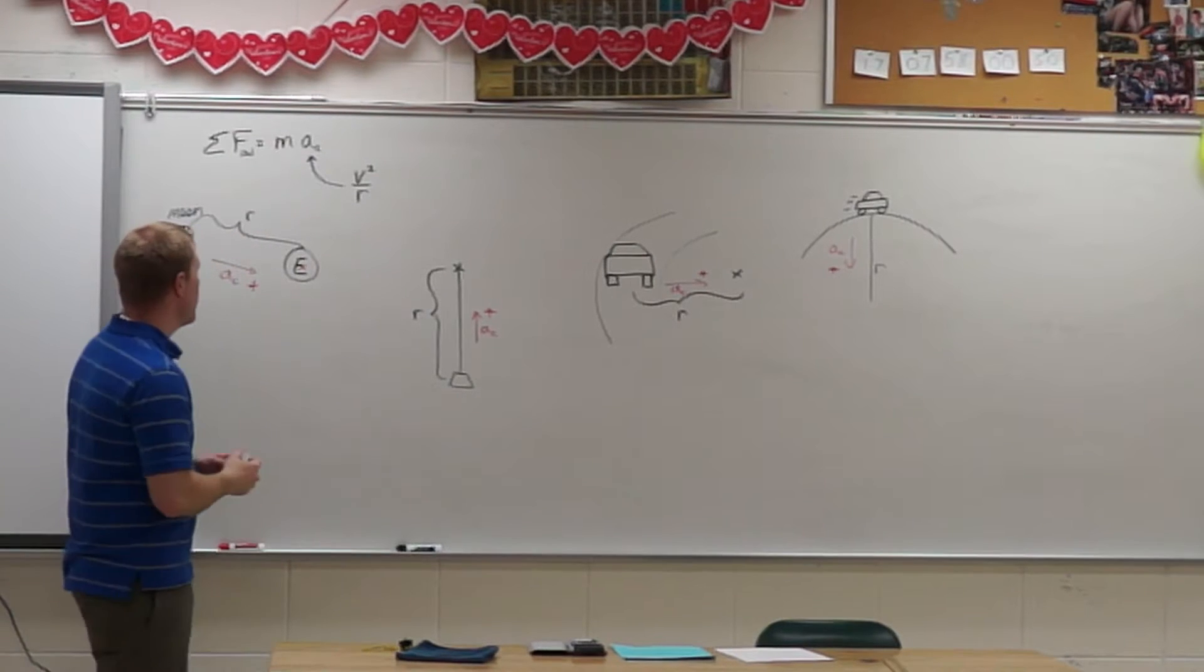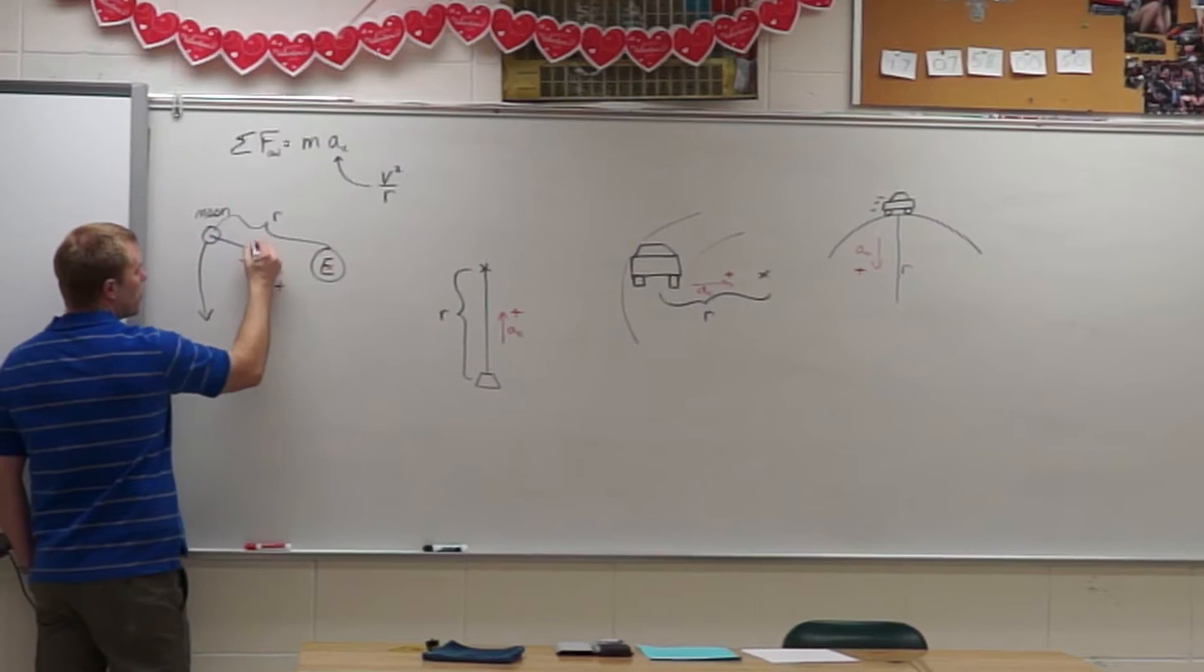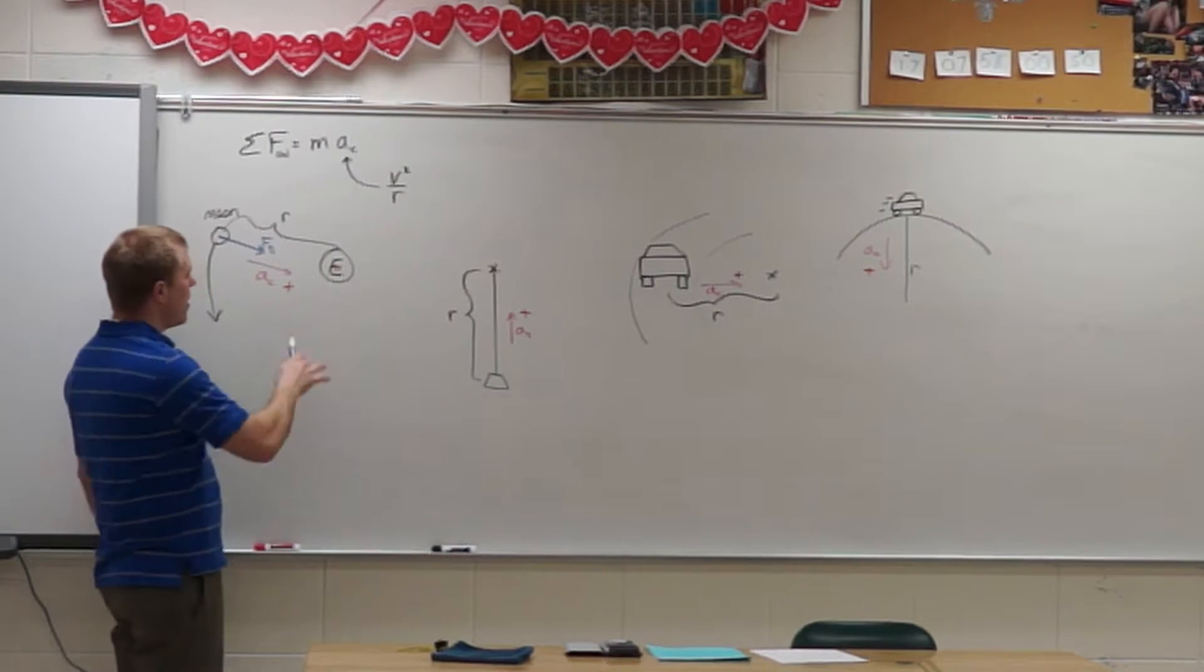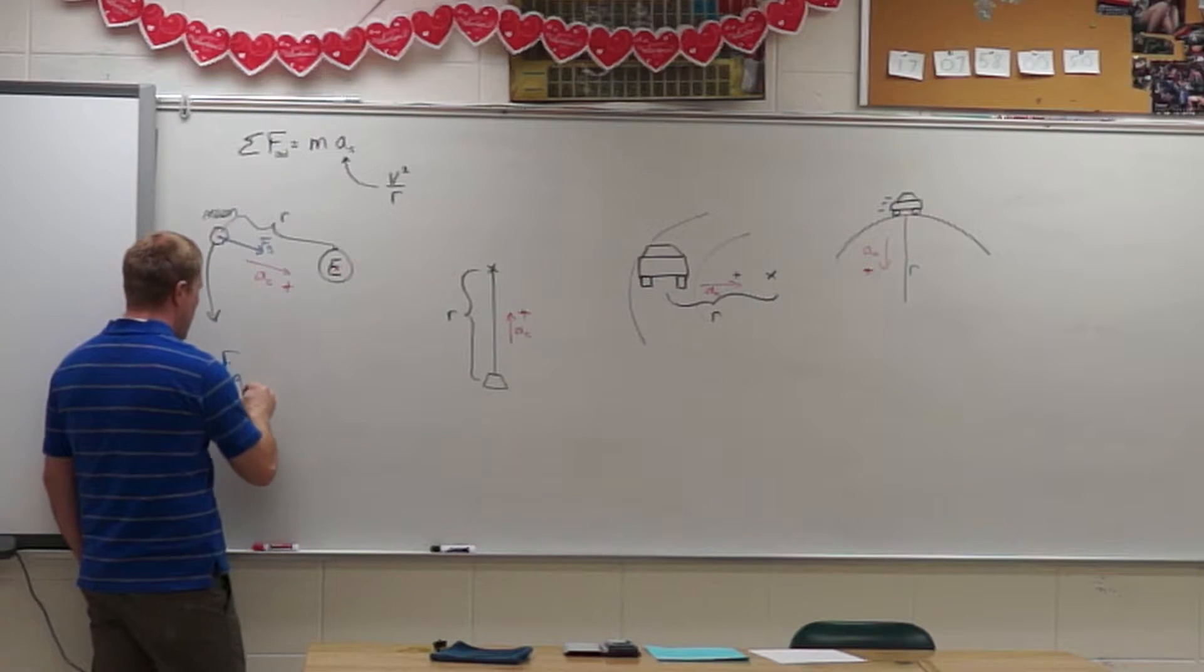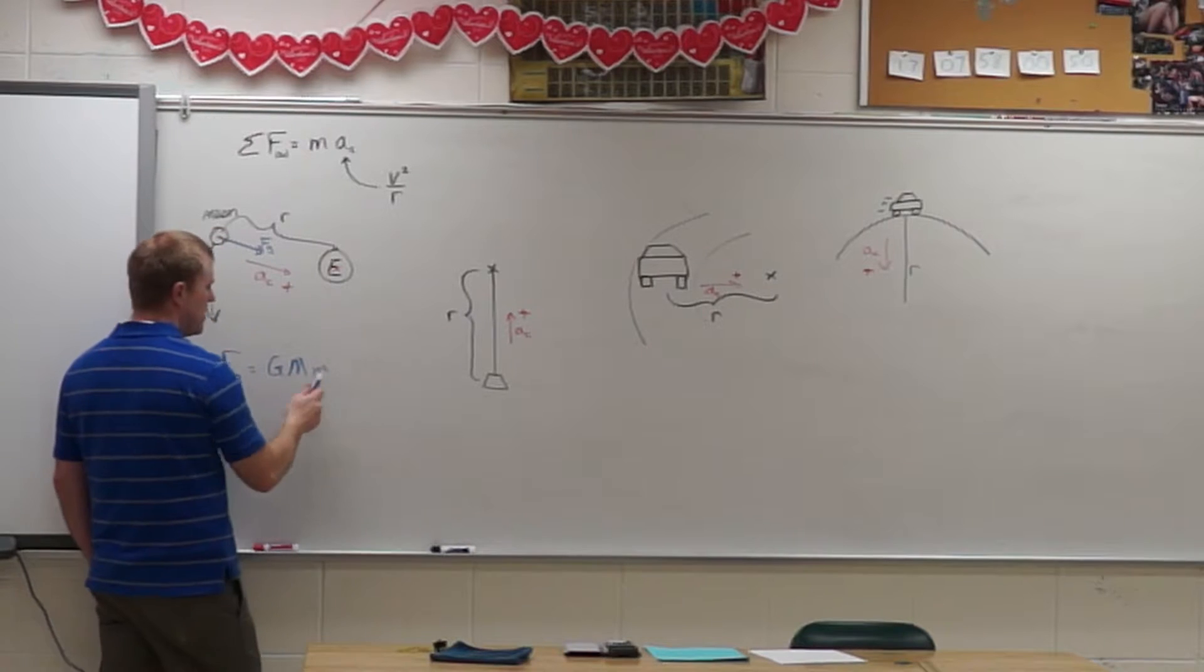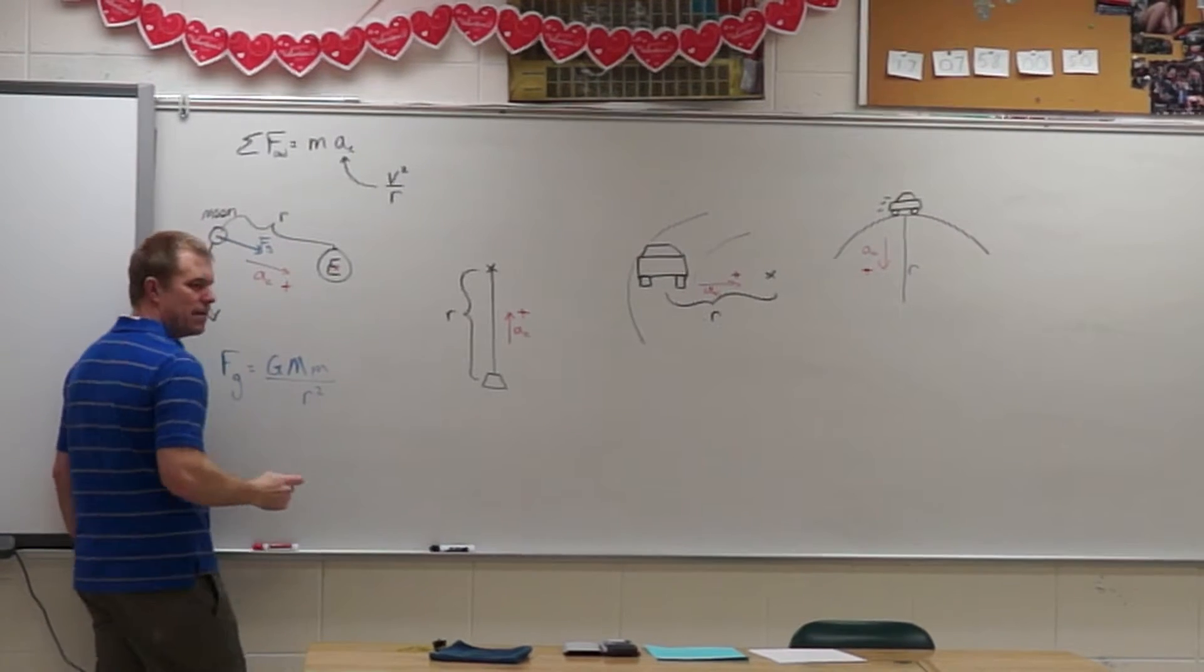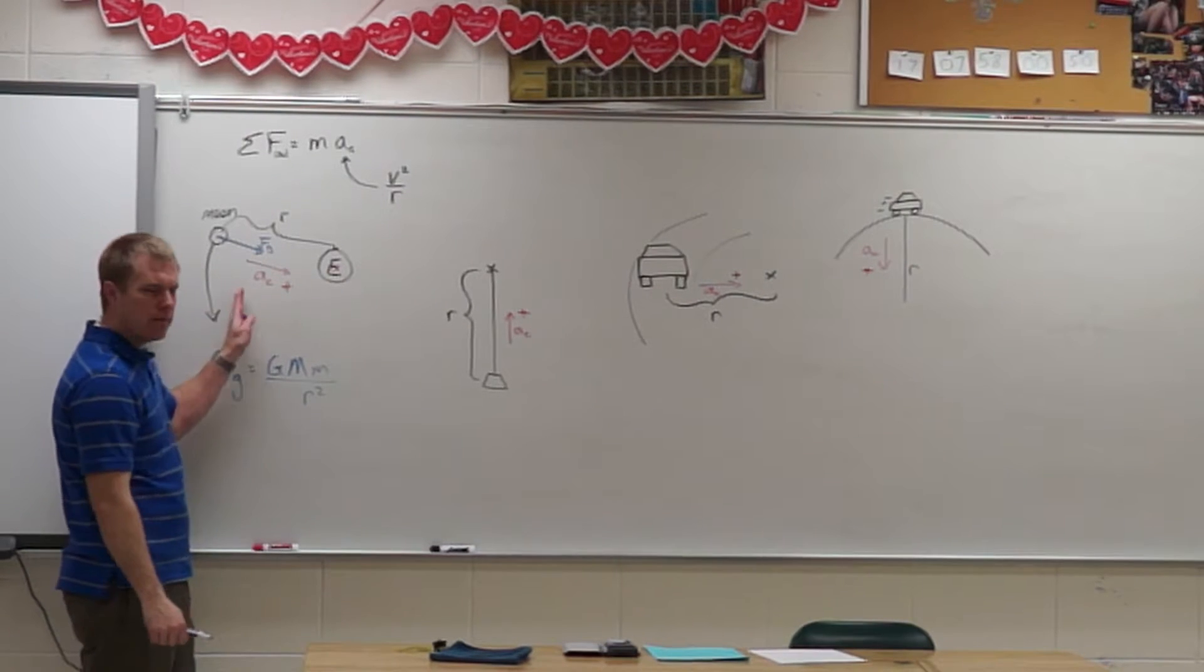The next step is you're going to draw those forces. So for the moon I have a force of gravity. Now remember when we talk about objects like this that aren't near the surface of the earth, that force of gravity is the universal gravitational constant, big M that would be the mass of the object in the middle, divided by the mass of the orbiting object, divided by the distance between them squared. So you got to use Newton's law of gravitation for problems like that.